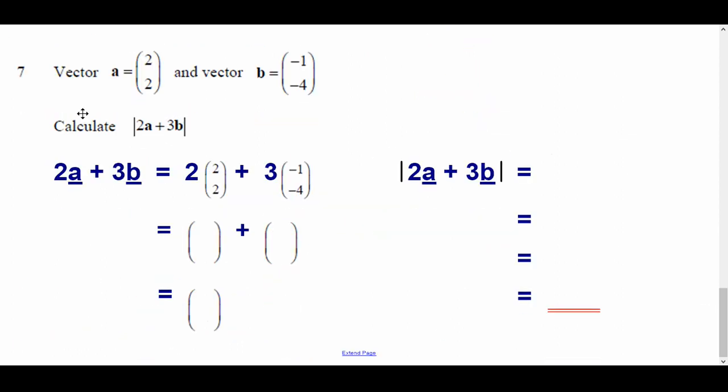OK, question 7. Vector a = (2, 2) and vector b = (-1, -4). Calculate the magnitude of 2a + 3b. Now, before I get the magnitude, I'm just going to work out what 2a plus 3b is. That's basically 2 times this one plus 3 times this one. So to multiply components like this, times the top and the bottom by the 2, so that's going to be (4, 4), times the top and the bottom by the 3, that's going to be (-3, -12). And then add them together. So 4, add minus 3 is 1, and 4, add minus 12 is minus 8.